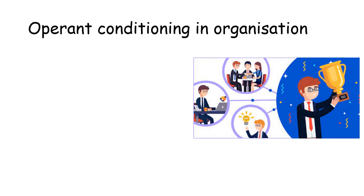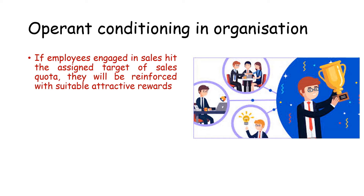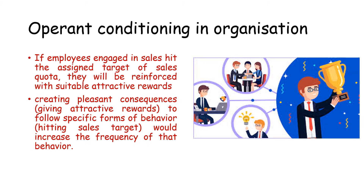Let us understand how operant conditioning takes place in an organization. For example, if employees in the sales department reach the assigned target of the sales quota set for a month, they will be reinforced with attractive rewards. Giving attractive rewards like a hike in salary, commission, or titles such as employee of the month will motivate employees to work harder, leading to positive reinforcement.